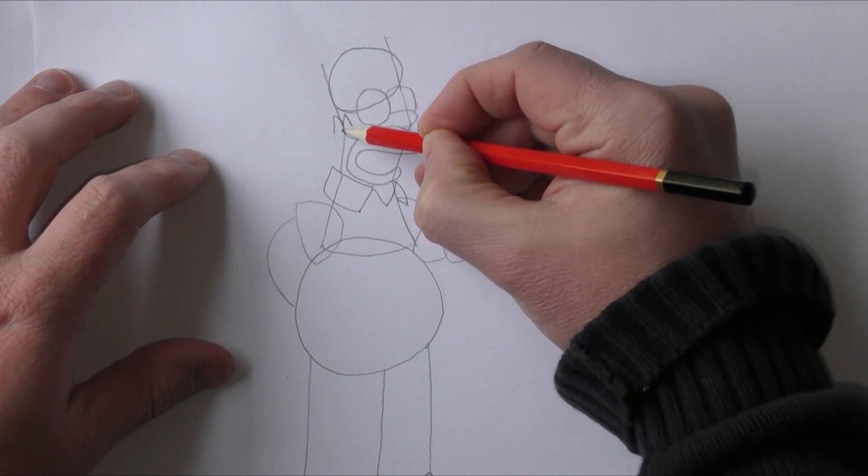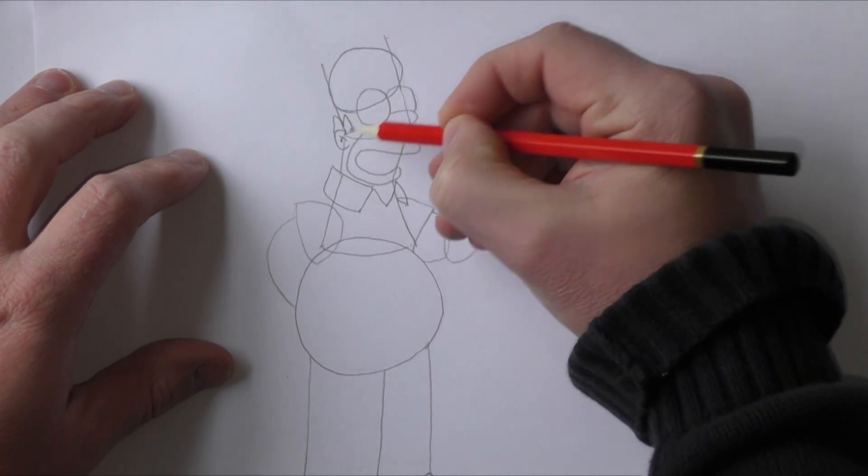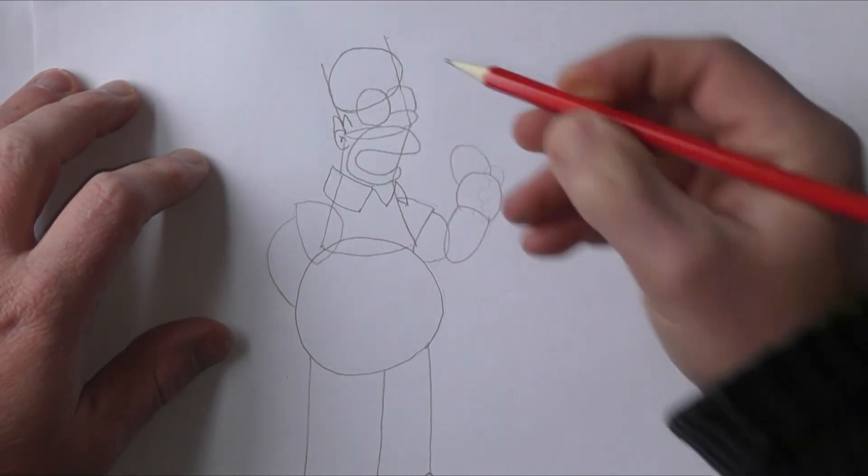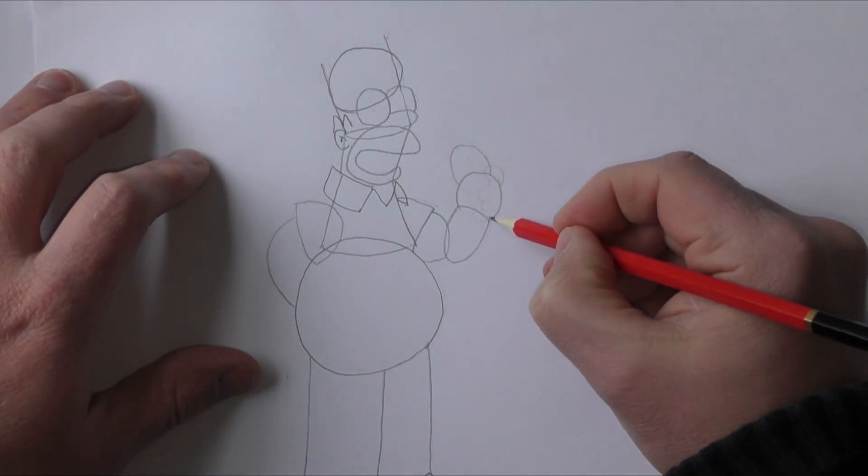Now we're going to draw Homer's hair. There we go, there's his hair and there's his ear. Now you might have noticed there that the hair is in the shape of an M and the ear is in the shape of a G, so that's for Matt Groening who was the guy that started up the Simpsons. So every time you see Homer Simpson you see a little picture of Matt Groening.